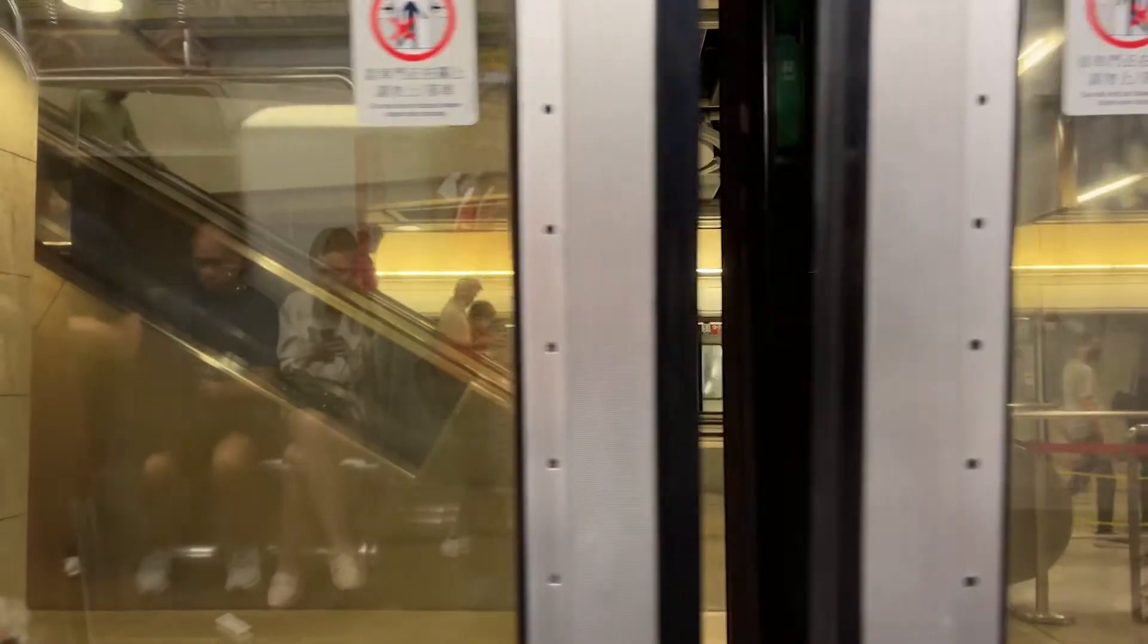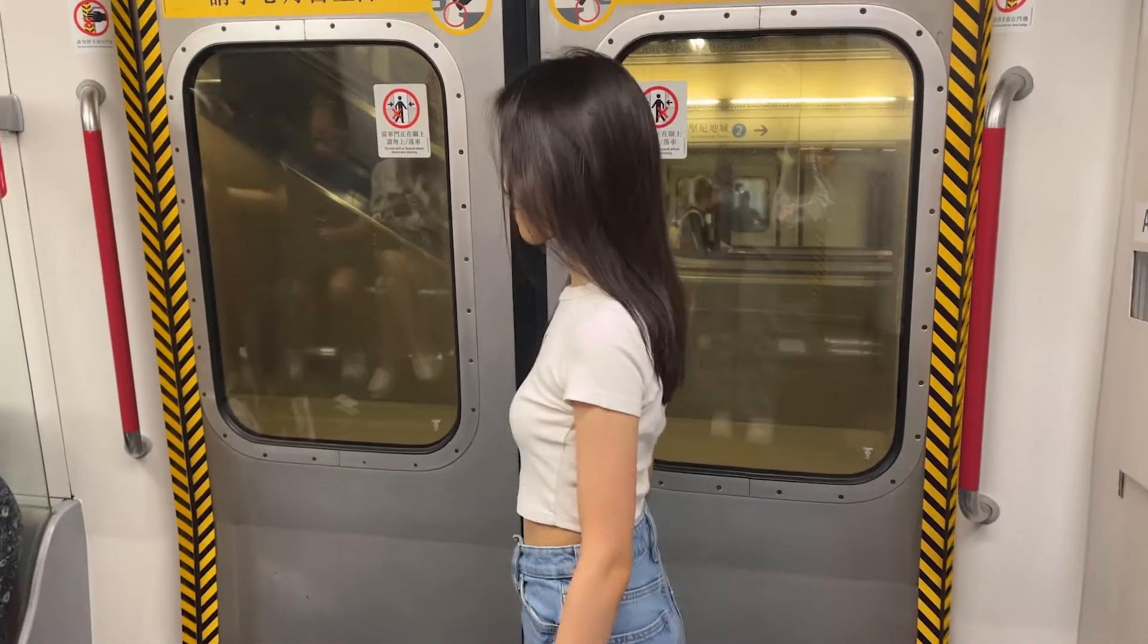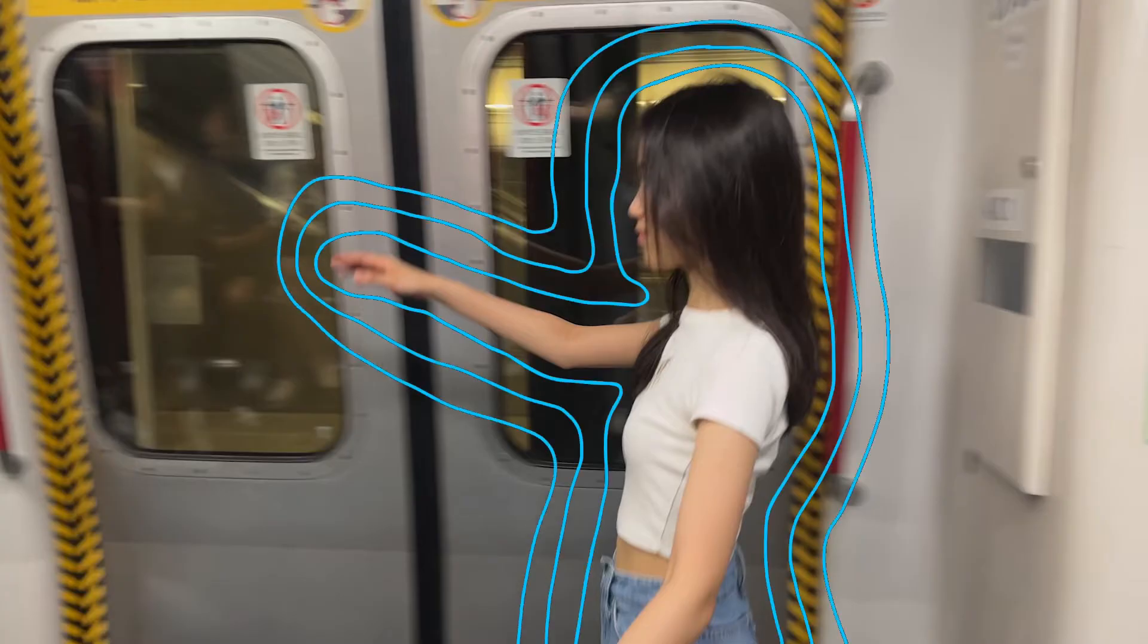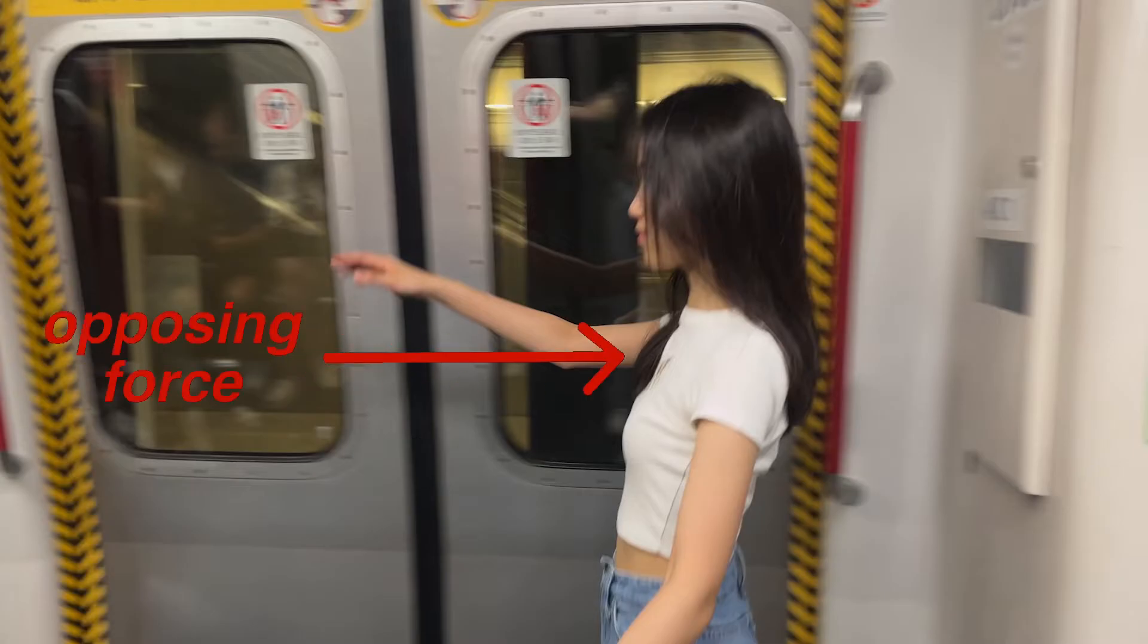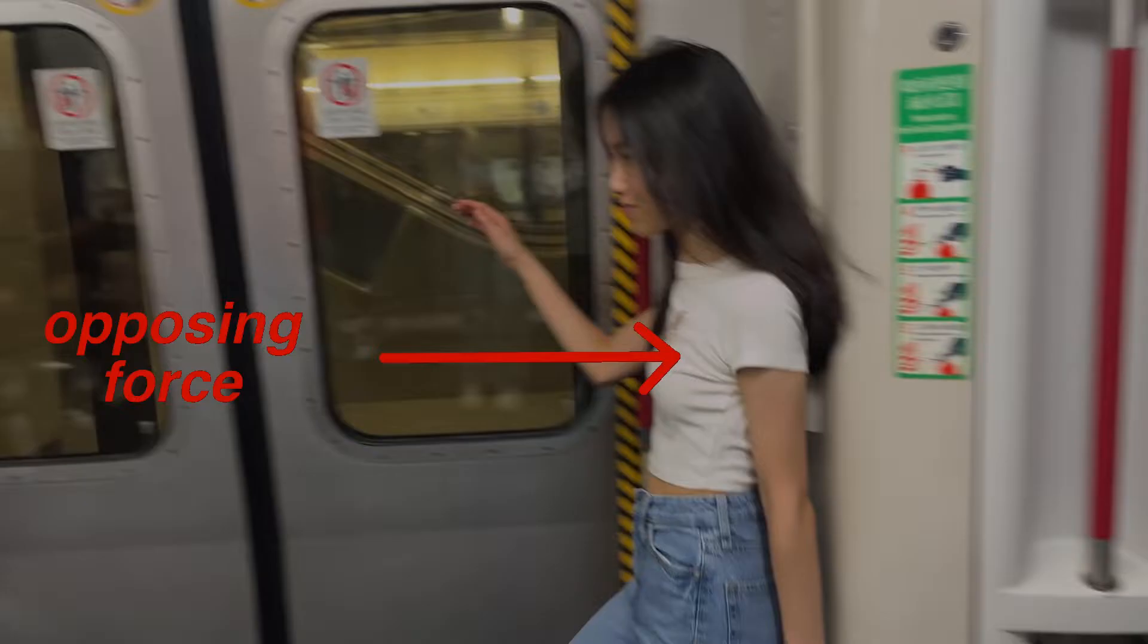Let's go back to the question at the start. Before the train starts moving, your body is at rest. When it accelerates, your body tends to remain at rest because of its inertia. However, the train's movement causes there to be an opposing force acting on your body which overcomes your inertia and causes you to fall back.